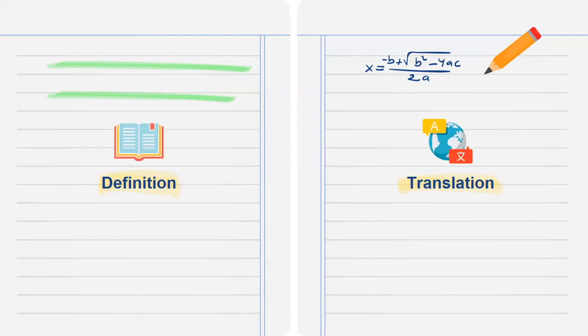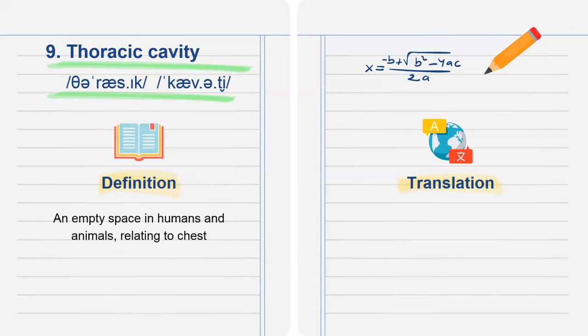Now let's look at number nine, thoracic cavity. An empty space in humans and animals relating to chest. Translation: khoang ngực.